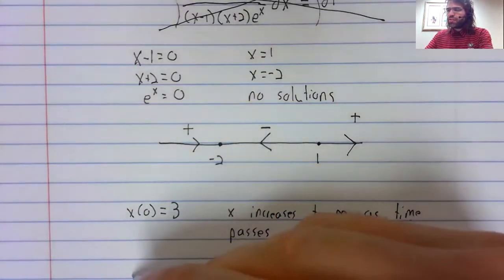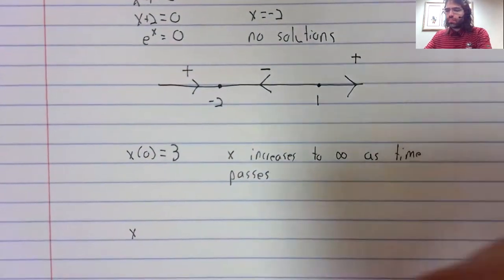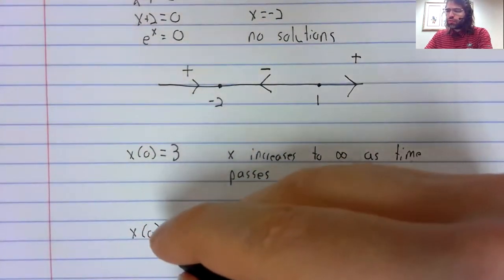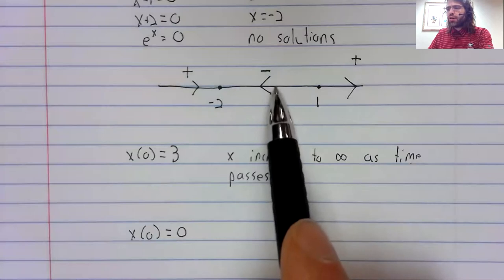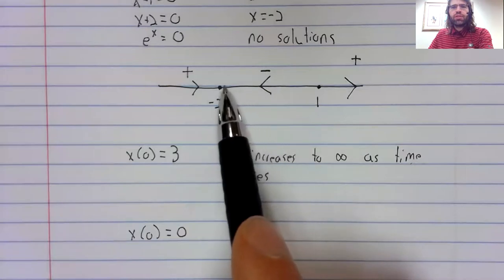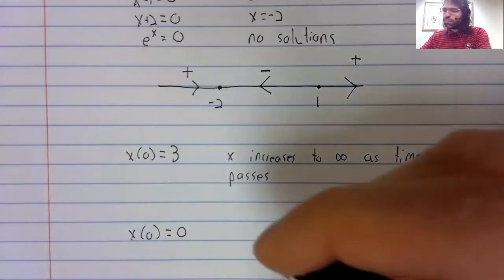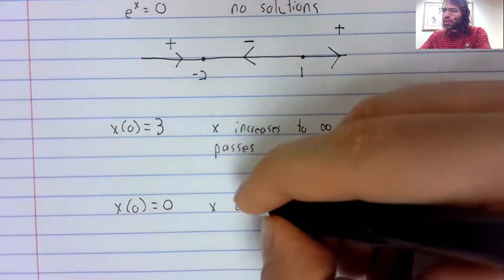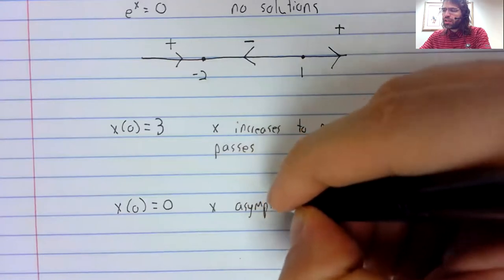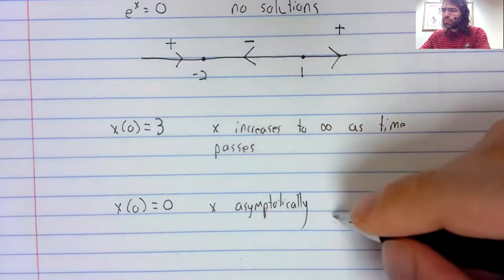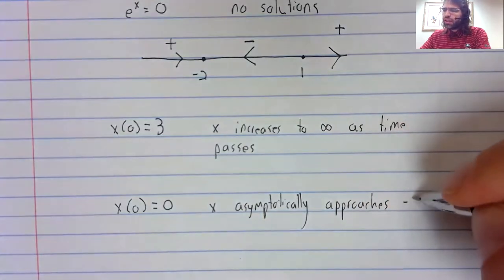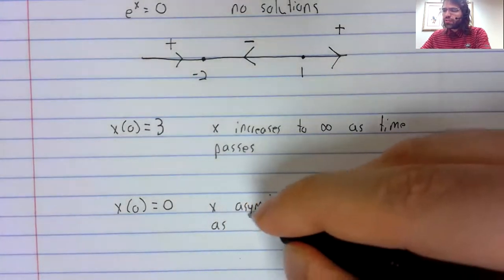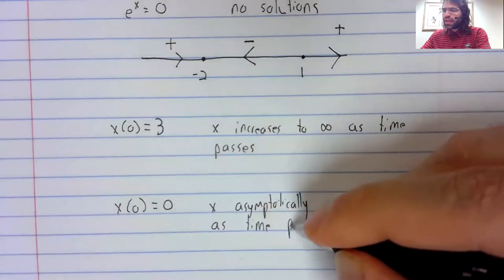What if instead, x of zero equals zero? Well, we're starting here, the derivative is negative. As time passes, we go to negative two. x asymptotically approaches negative two as time passes.